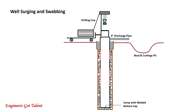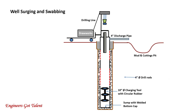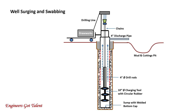Well surging and swabbing is a well cleanup process to wash out bentonite mud cake sticking at the casing walls. It is only done on blank casings with no mud circulation and no water or air injection. A 10-inch charging tool with circular rubber is attached to the 4-inch drill rod and hung over the rig chains. When the charging tool is lowered, a pressure surge is created to wash out the bentonite and drilled cuttings out of the well. When the tool is pulled up, a sucking action or swabbing effect is created to suck out bentonite and drilled cuttings. This process will not only clean the well, but allows gravel to be compacted.